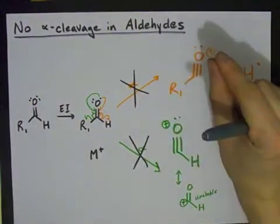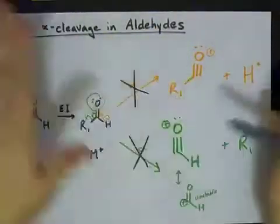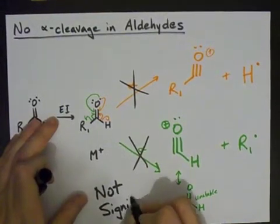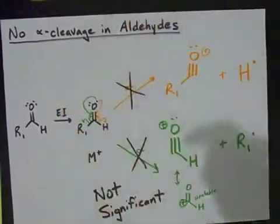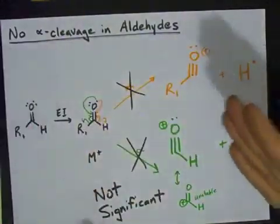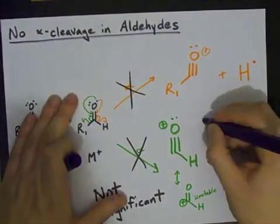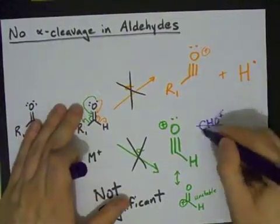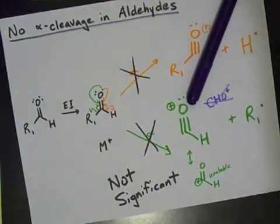Again, it will occur a tiny bit, but alpha cleavage for aldehydes is generally just not a factor. I prefer to say it's not significant. Long story short, with aldehydes, do not expect alpha cleavage because H radicals are not stable and CHO plus ions are also not stable. It's the way it is. Drop the mic and best of luck to you.